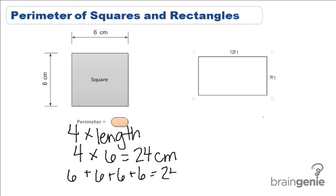But multiplying is much faster and simpler than adding all of those numbers. For rectangles, since two of our sides could be one length while the other two are a different length, we need to add our length plus our height and multiply by 2.